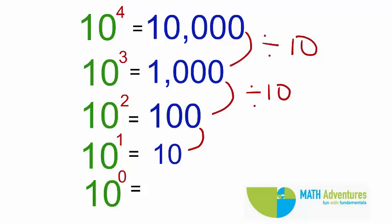Again, 100 divided by 10 gives me 10, which is nothing but 10 to the power of 1. If I divide 10 to the power of 1 or 10 by 10, what will I get? Will I not get 1? Can I say 10 to the power of 0 is equal to 1?